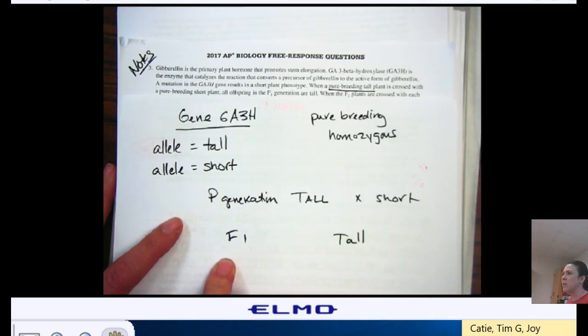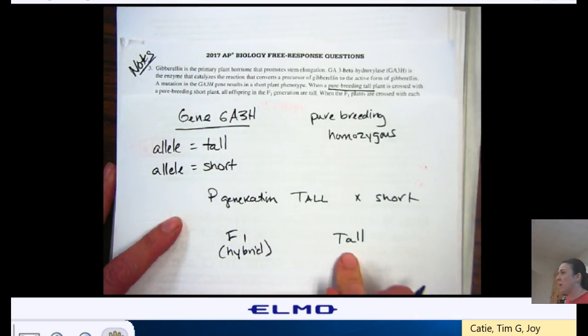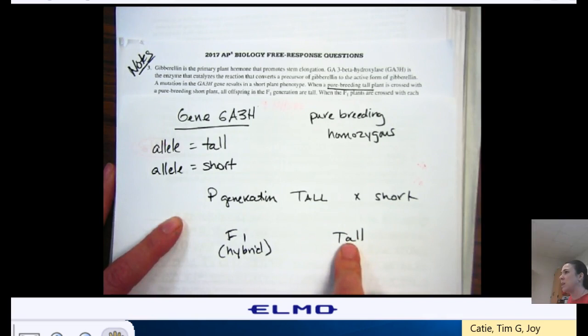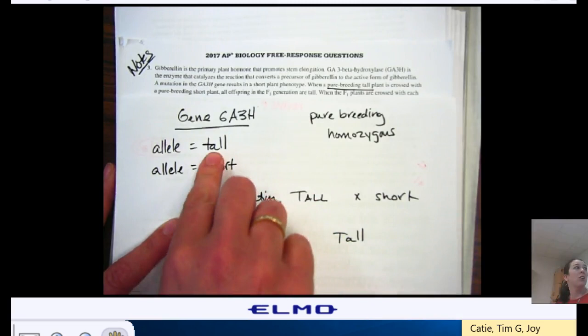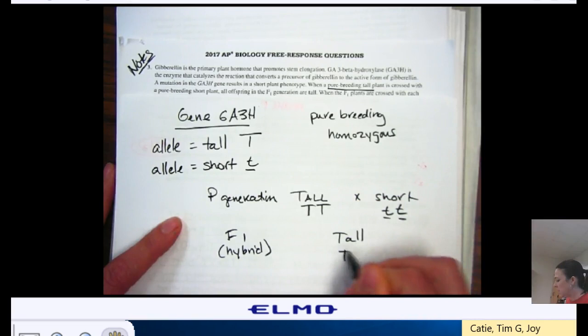What's the genotype always of my F1? Heterozygote. Because my F1 is my hybrid, and I know that my genotype is always heterozygous. And since this is tall, what's dominant? Yeah, so now my tall allele, I know, is dominant to my short allele. So, here are my genotypes.